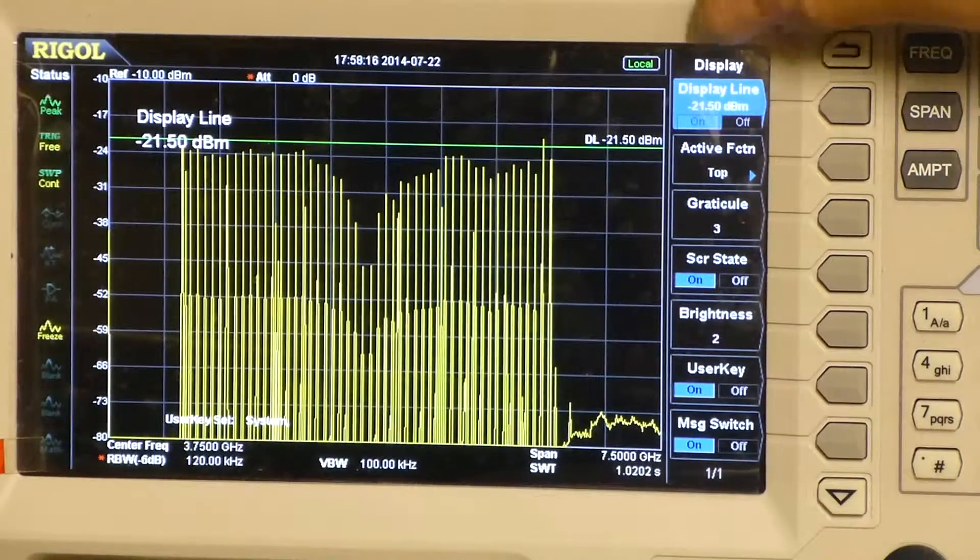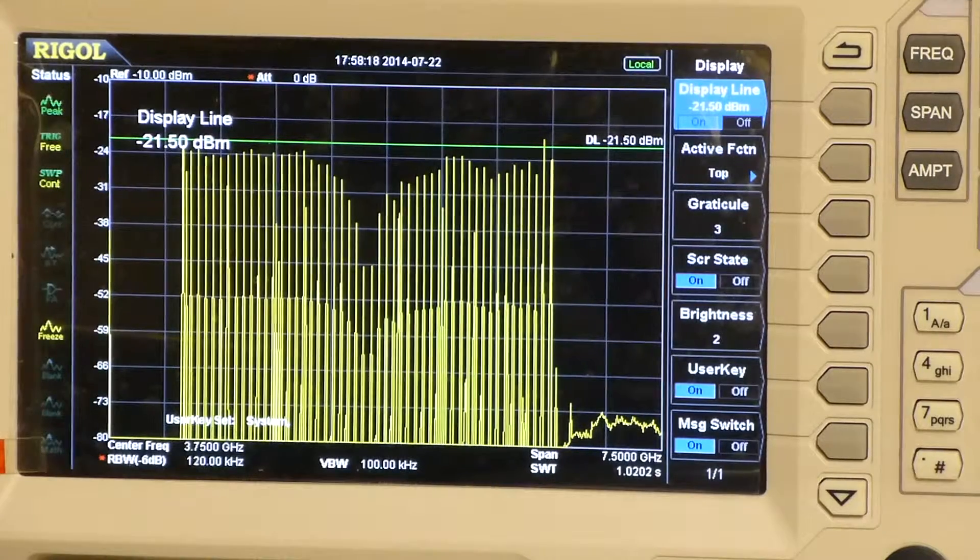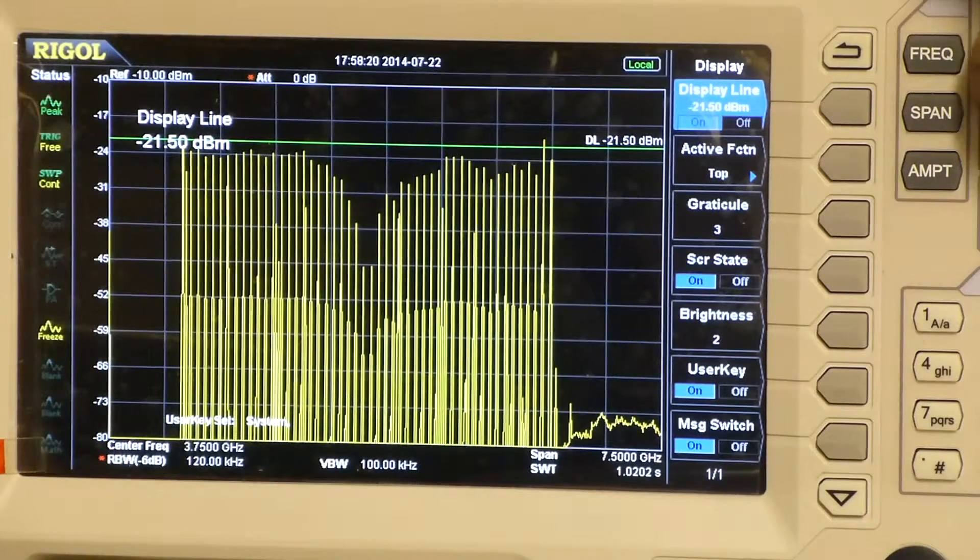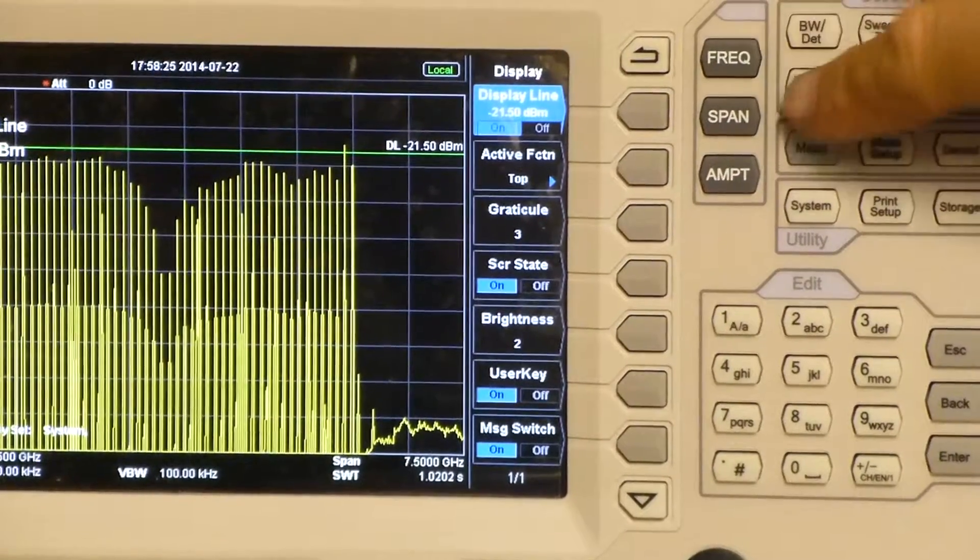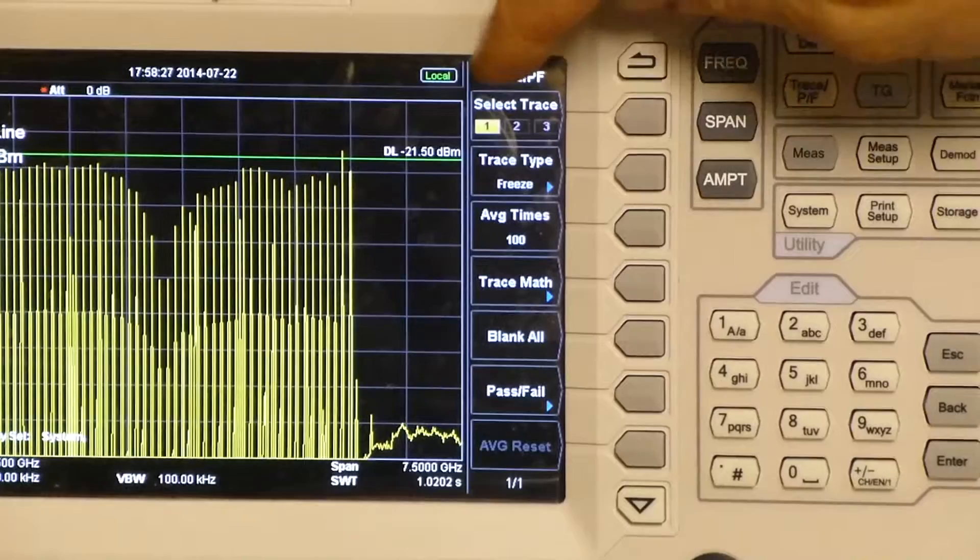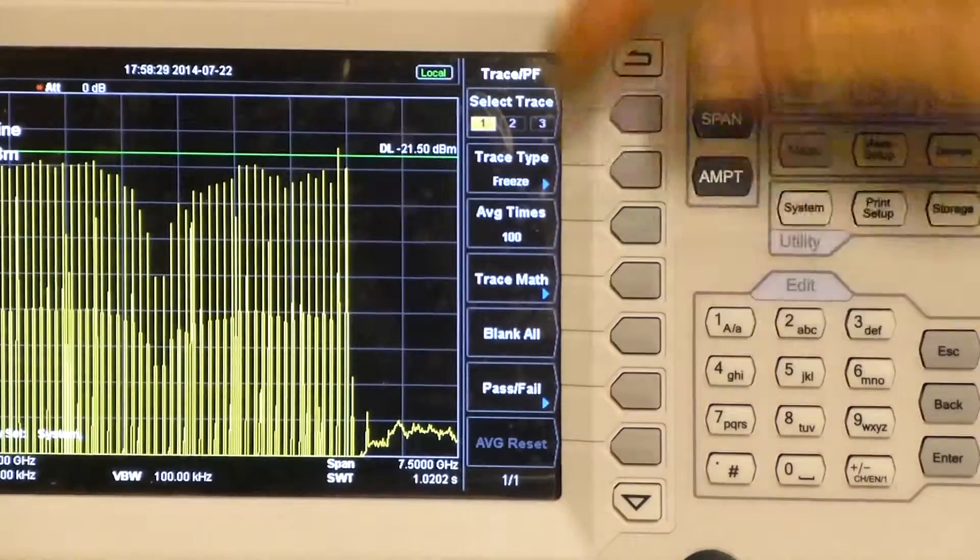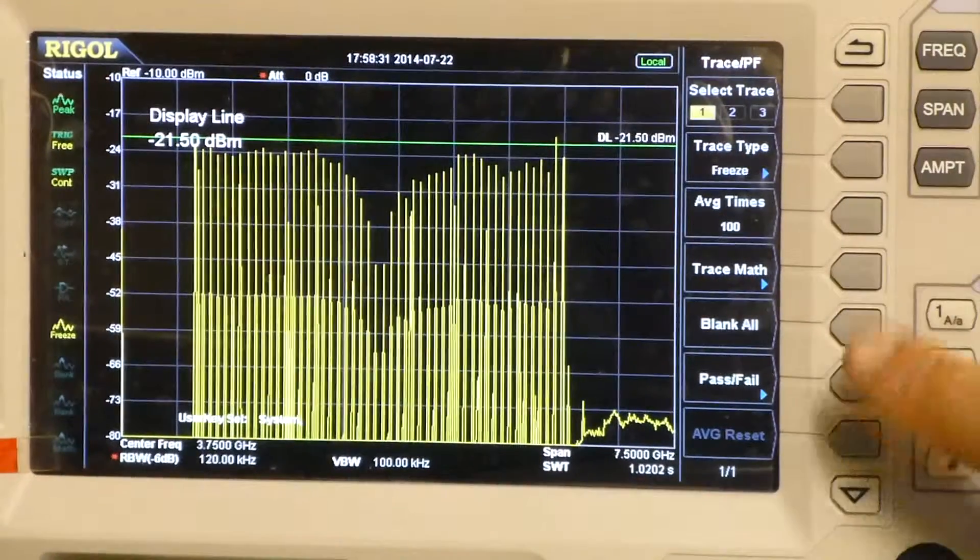So what I'm going to show you right now is the menu underneath the trace and pass-fail button, which is this button here, trace pass-fail. If I push that, you'll see a pass-fail function appears under the trace pass-fail menu.